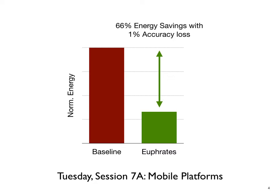Overall, we achieve about two-thirds energy savings with only 1% accuracy loss. We think that this work offers a promising first step to enable the transition from domain-specific accelerators to domain-specific SoCs.